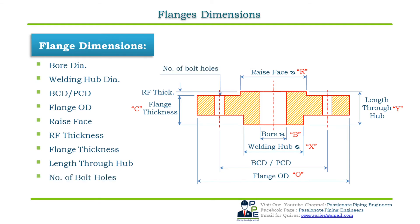Number of bolt holes is the number of bolt holes a flange has for mating with other components. Bolt holes are in multiples of four and shall be equally spaced; pairs of bolt holes shall straddle fitting centerlines. Bolt hole diameter is the diameter of the bolt holes on a flange through which the bolts are passed and bolted to the mating flange.